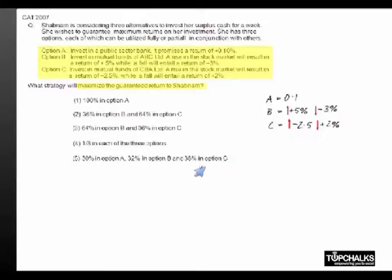So in the event of stock market rising, the return on investment will be X times 5 plus 1 minus X times minus 2.5, which is equal to 7.5X minus 2.5.